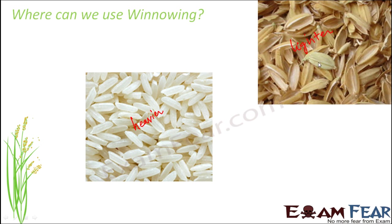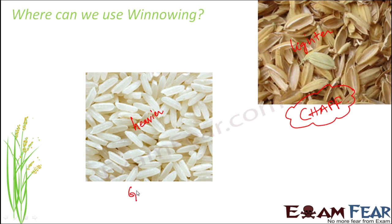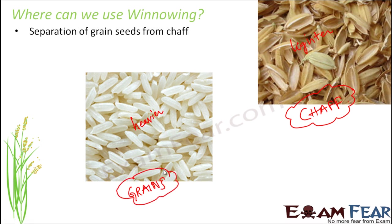These dry coverings of seeds are also known as chaff. So winnowing is very commonly used to separate chaff from the grains — the separation of grain seeds from chaff — because size-wise they are similar but one is heavier and the other is lighter.